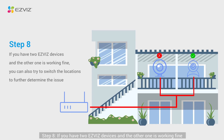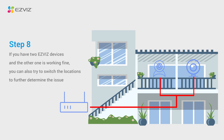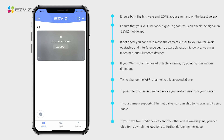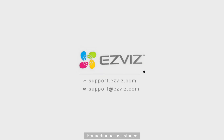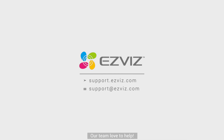Step 8: If you have two EasyViz devices and the other one is working fine, you can also try to switch the locations to further determine the issue. If the issue persists after following the above steps and you need additional assistance, feel free to contact the support team by emailing support@easyviz.com. Our team would love to help.